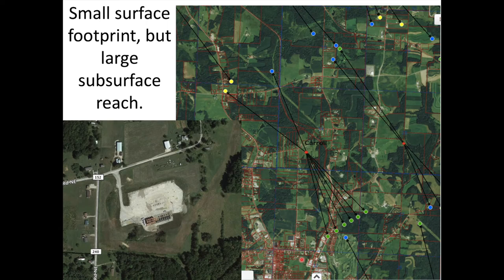Here's what it looks like on the surface. Directional drilling allows oil and gas production to have a small surface footprint, but a large subsurface extent. These images are just north of Carrollton in Carroll County, Ohio. This site is exploiting gas more than 7,000 feet below the land surface. On the left, you can see the well pad surrounded by farmland and rural houses. On the right, the well pad is shown in red and the green, blue, and yellow dots show the extent of horizontal drilling.